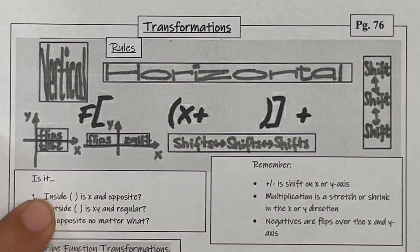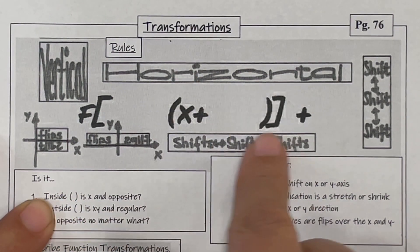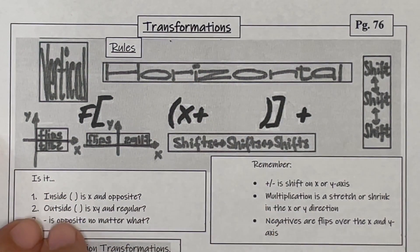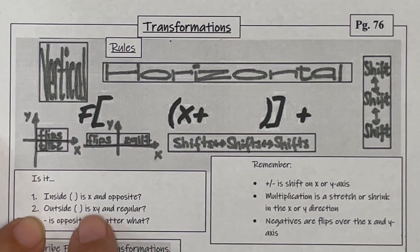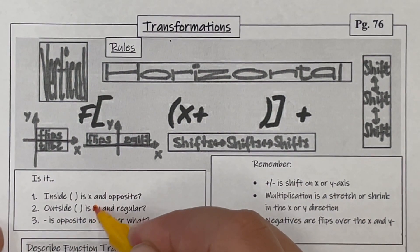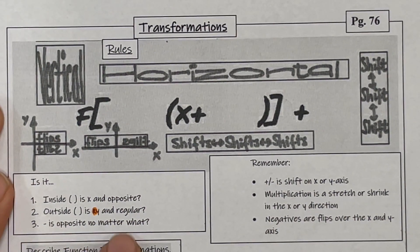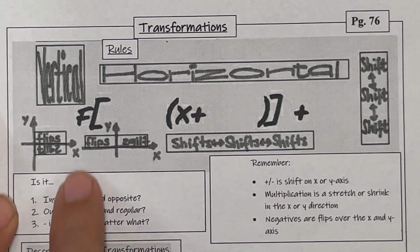If it's inside, it's X and opposite — that means inside the function. If it's outside, it's Y and regular. Negative is opposite, no matter where you are.